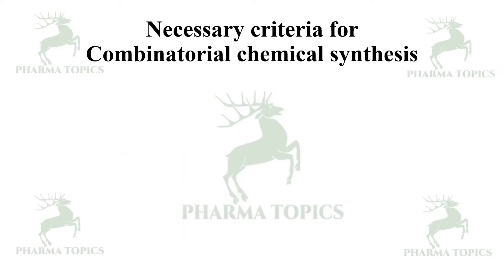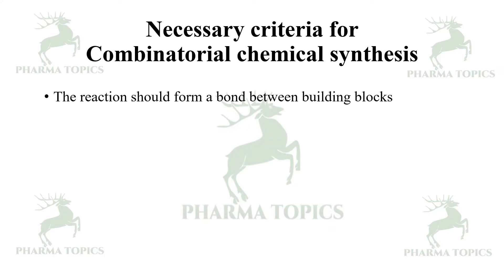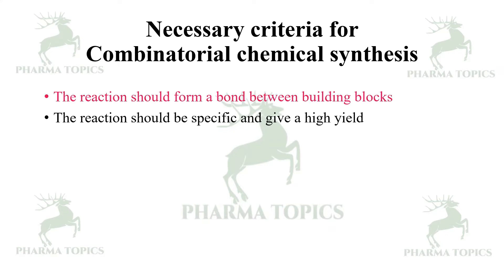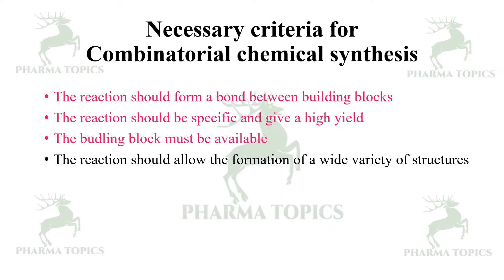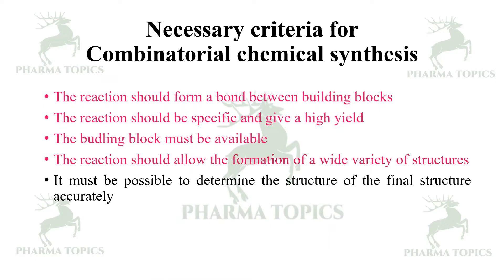The necessary criteria for combinatorial chemical synthesis: the reaction should form a bond between the building blocks; the reaction should be specific and produce high yield; the building block must be available; the reaction should allow formation of a wide variety of structures; and it must be possible to determine the structure of the final product accurately.